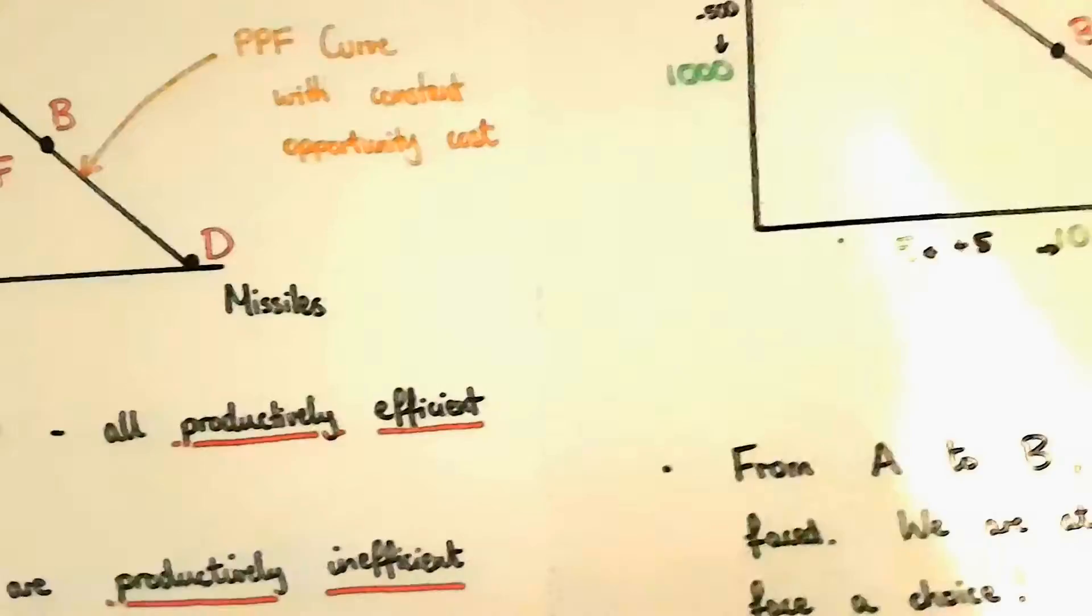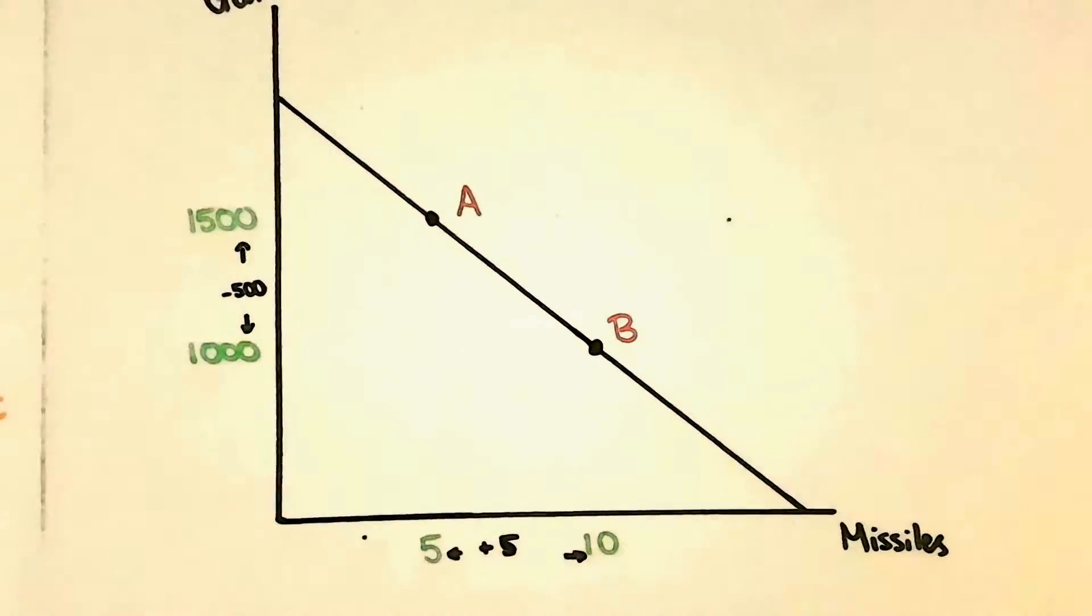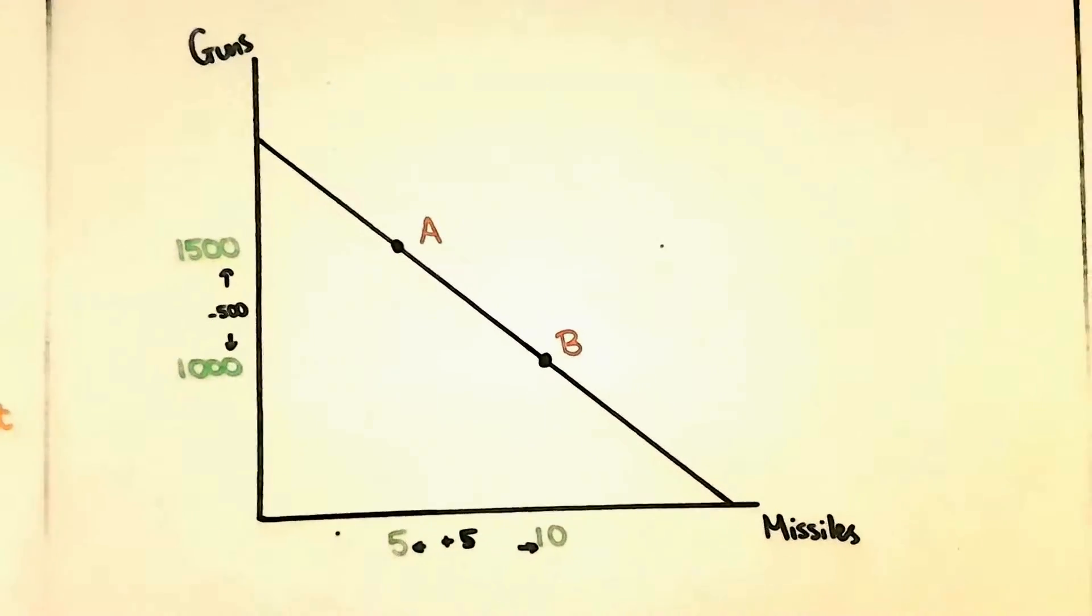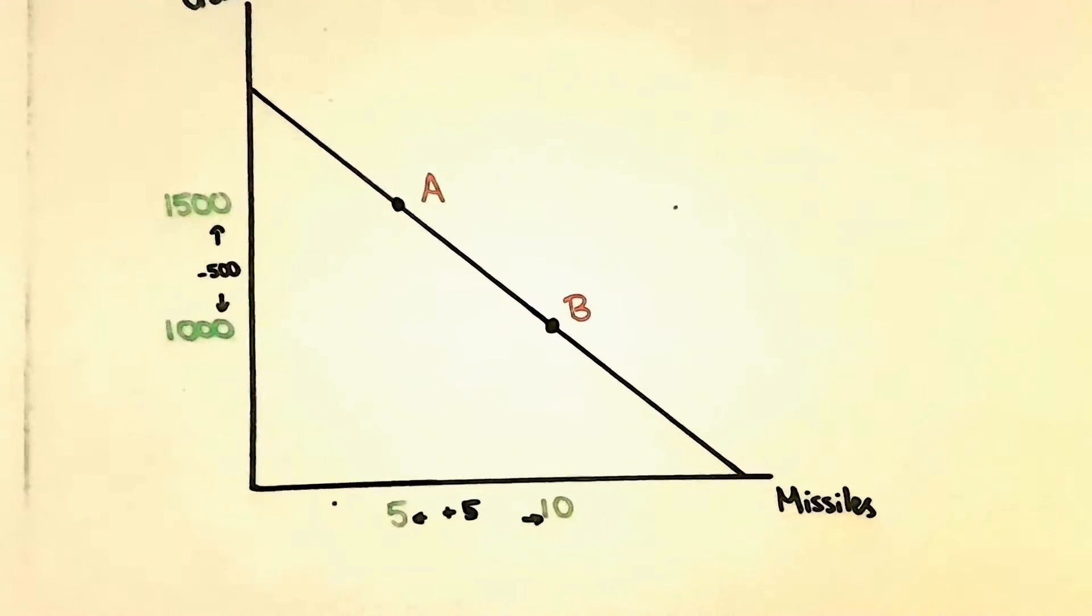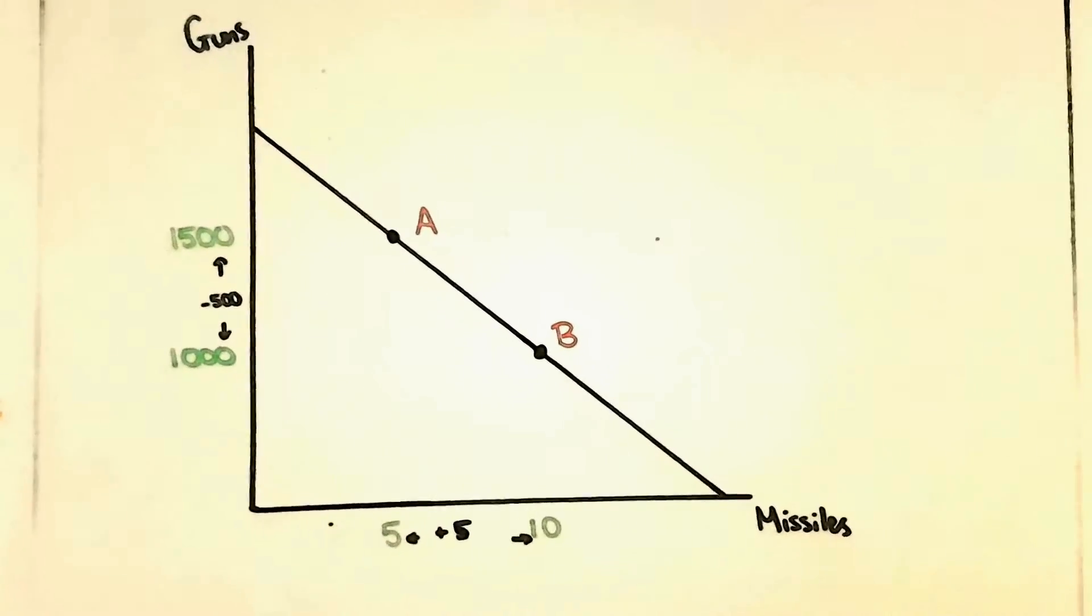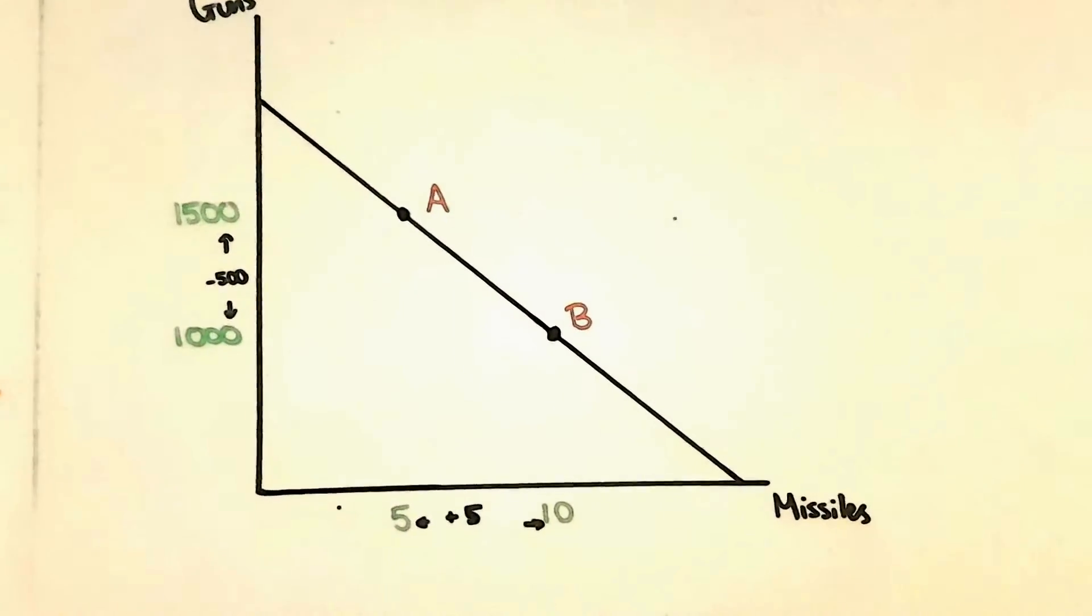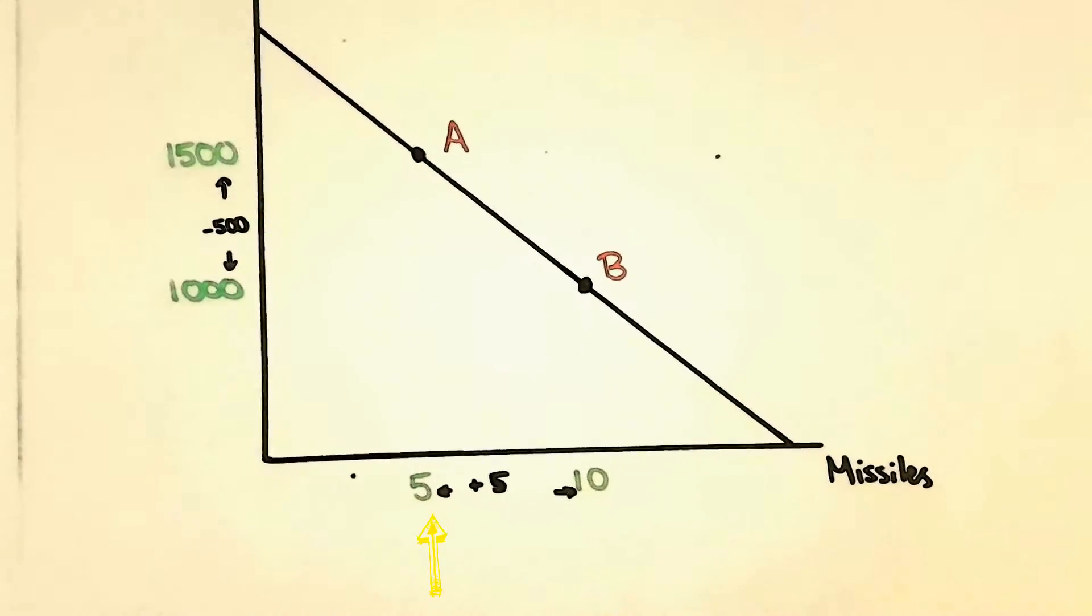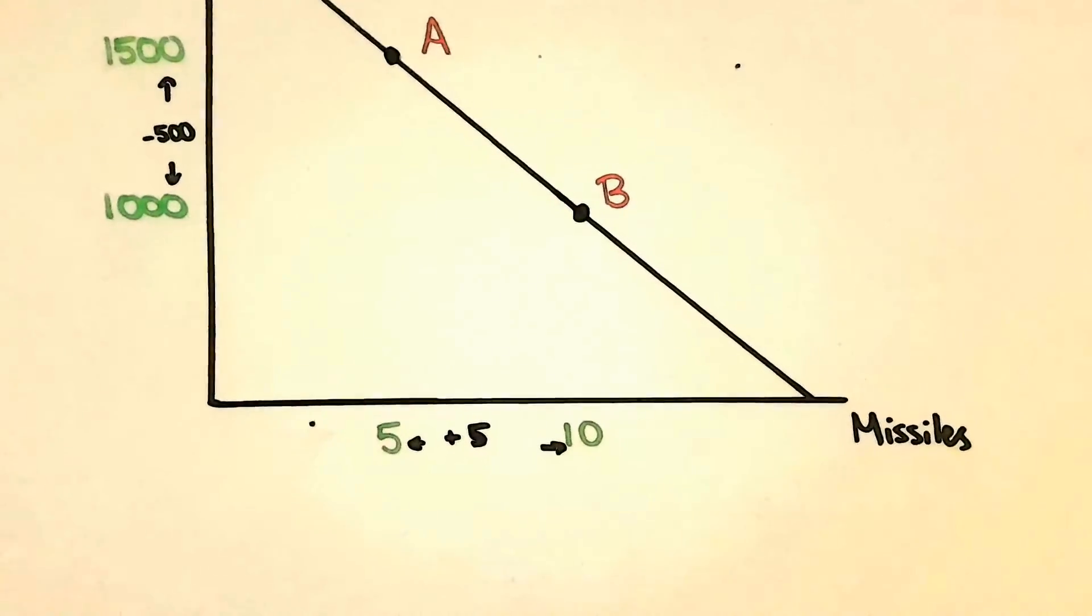We're now going to add some figures into the diagram. Have a look at point A. The amount of guns produced is 1,500 and the amount of missiles produced is 5.